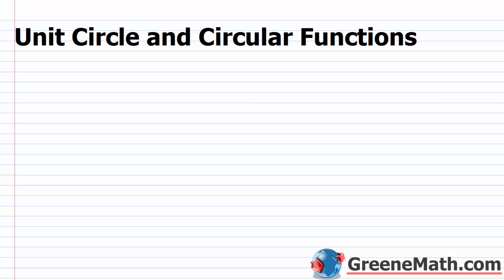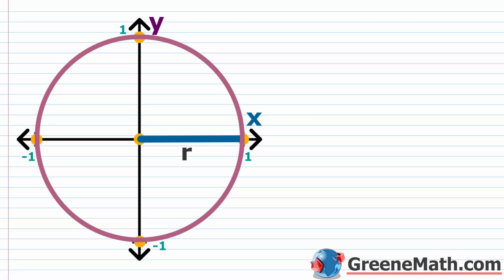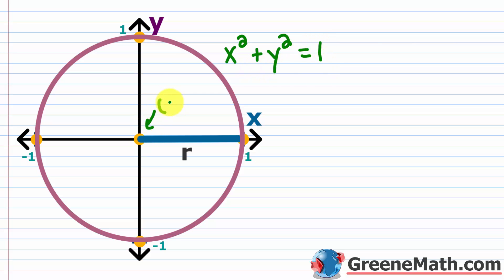In this lesson we want to talk about the unit circle and circular functions. Back in our algebra course we learned how to graph a circle and work with the equation of a circle. We have here a unit circle with the center at the origin and the radius is going to be one. So the equation for this circle is x squared plus y squared is equal to one. The center is at the origin — the point (0, 0) — and the radius is one, so the distance from the center to any point on that circle is one unit.